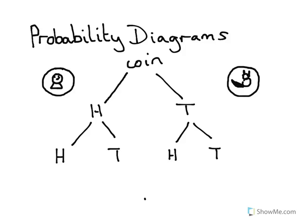Let's look at some statistics. If you have the sort of question that says: what is the probability of getting one head and one tail when you throw a coin? Or what's the probability of getting a head and another head when you toss a coin, or a tail and a tail? The easiest way to start learning about statistics is to write a tree diagram.